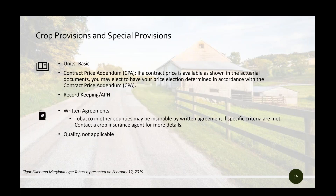There are important elements addressed in the tobacco crop provisions and special provisions. Tobacco is limited to a basic unit structure — no optional units, no enterprise units. The contract price addendum is applicable to these types and the organic practices. If you have a contract that provides for a premium amount over the base price set on or before the acreage reporting date, you may elect the contract price as your price election. Production history must be kept separately by basic unit. Written agreements are available and may allow tobacco to be insured in other counties. Quality adjustment, while available on some types of tobacco, is not applicable to these types in your region.